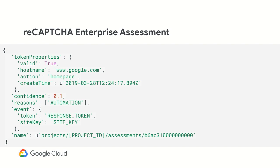Here's what the assessment will look like when you get it back. The confidence will be something like 0.1, so that's the score we discussed. It runs from 0 to 1 in decimal increments. And then you'll also get reasons — if they exist, it could be blank, but if not, we'll give you the reasons, for example automation that you might expect.